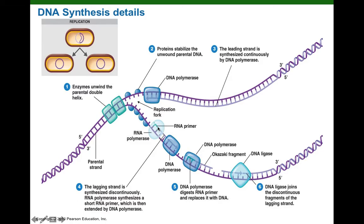We can see the RNA primer here as a darker green color. This enzyme right here would be our special RNA polymerase called primase. As soon as that short little RNA primer has been made, DNA polymerase 3 can come along and basically knock the primase off the DNA.